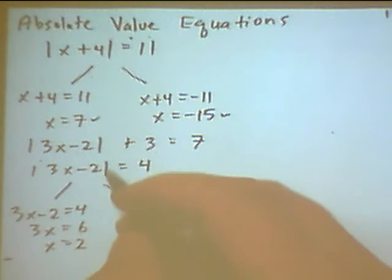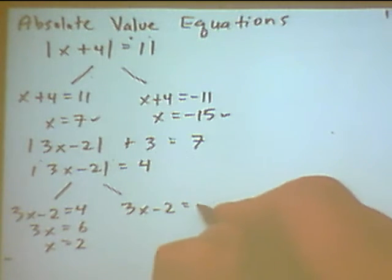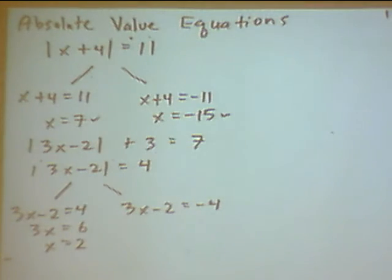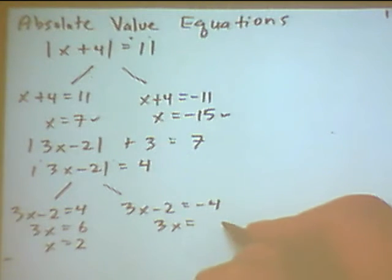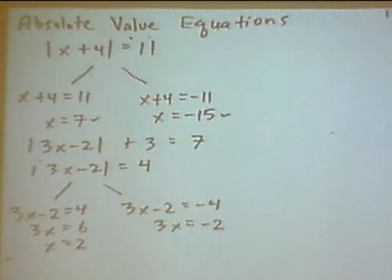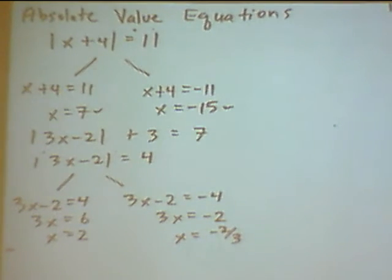The second problem, drop the absolute value signs and make the number negative. So now to solve for x, I add 2 to both sides. And now to solve for x, divide both sides by 3. So it looks like I get a solution of x equals negative 2 thirds.